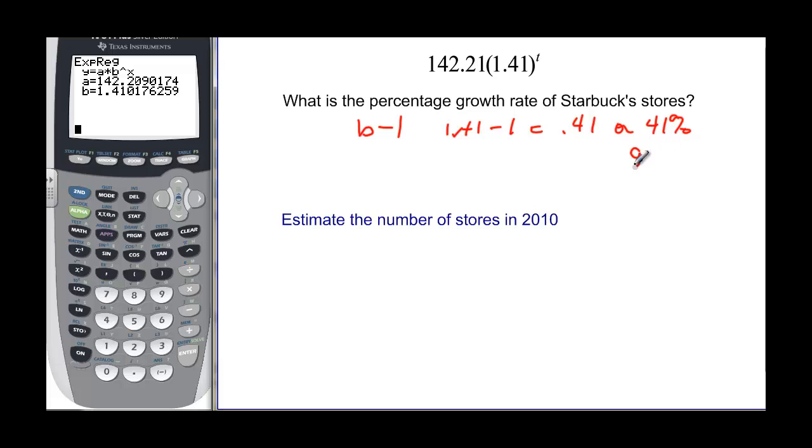If this had been a decay, I would have had 1 minus the B. This B minus 1 would have been switched around. And it would be 1 minus B so that I can get a number. Because I start with a number that's smaller than 1, if I subtract that number from 1, I should be able to find my percentage. That would be a decay.